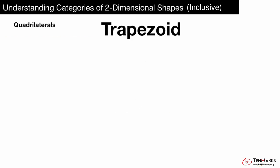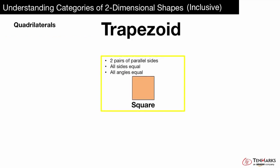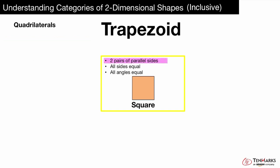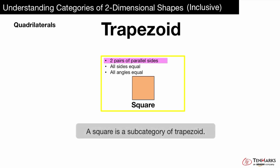Let's look at a square. Is it a special type or subcategory of trapezoid? A trapezoid, by definition, has at least one pair of parallel lines. Does a square have at least one pair of parallel sides? Yes, it actually has two pairs of parallel sides. So that means a square is a special type or subcategory of trapezoid.